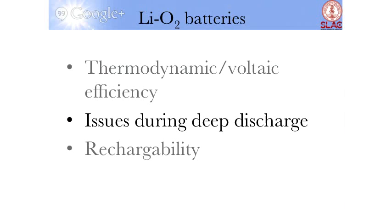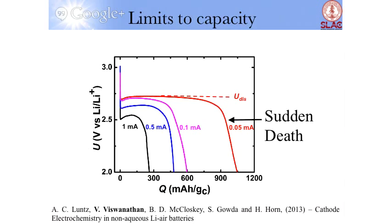The topic we will discuss is whether we can deep discharge this cell. Deep discharge essentially means running the battery for a longer time. When you do that, you can draw current to a certain point, and then suddenly the voltage drops — this is what's called sudden death. After a certain point, the battery just suddenly dies.